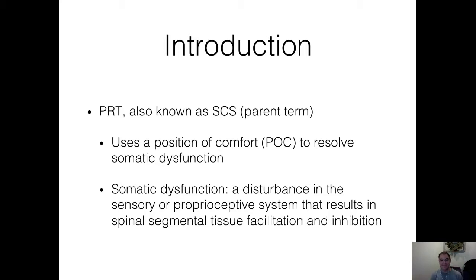PRT is also known as strain counterstrain. In positional release, we use the position of comfort to resolve somatic dysfunction. What is somatic dysfunction? It's a disturbance in the sensory or proprioceptive system that results in a spinal segment tissue facilitation and inhibition. For example, if you have a trigger point on your wrist extensors — tennis elbow — that somatic dysfunction in the muscle can lead to tissue facilitation and inhibition of that tissue.